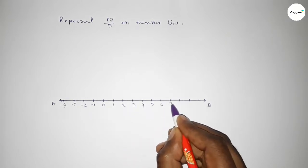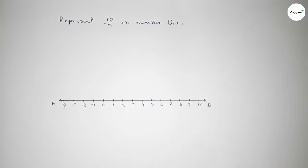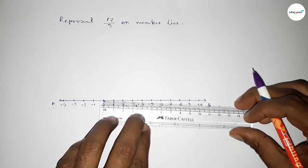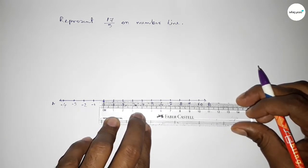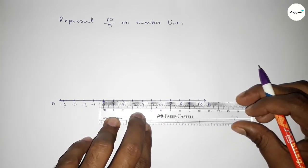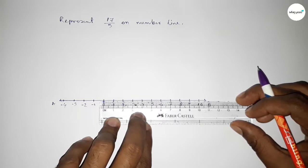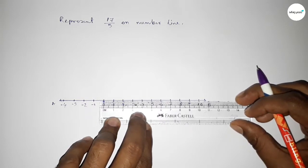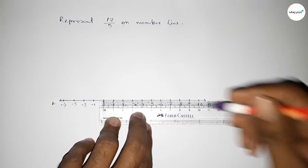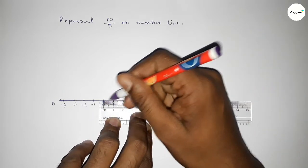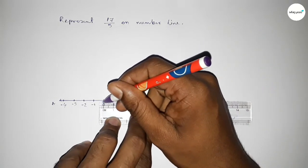4, 5, 6, 7, 8, 9, 10. Now we have to divide the distance between any two numbers into 5 parts. If we divide the distance between any two numbers into 5 parts, then the length of each part equals 0.2 units. So now first dividing the distance between 0 to 1.